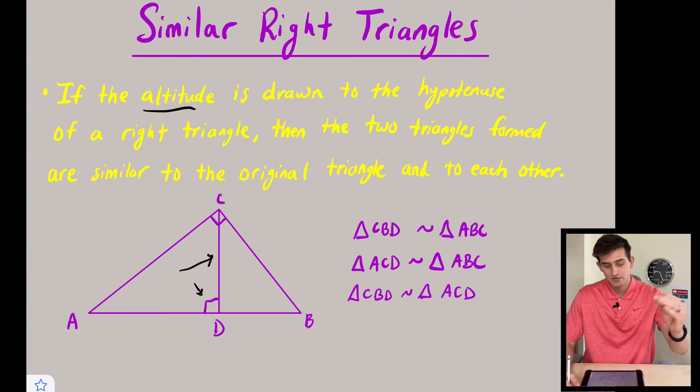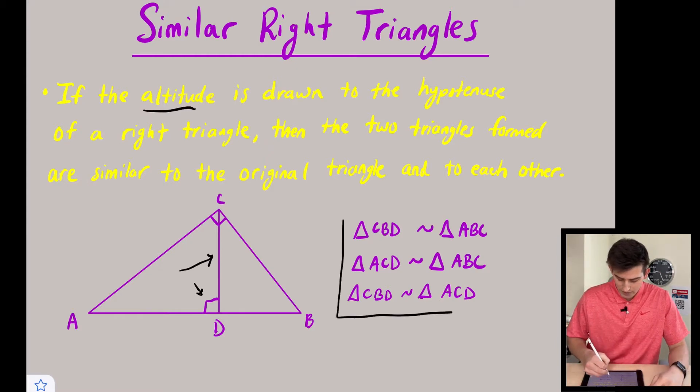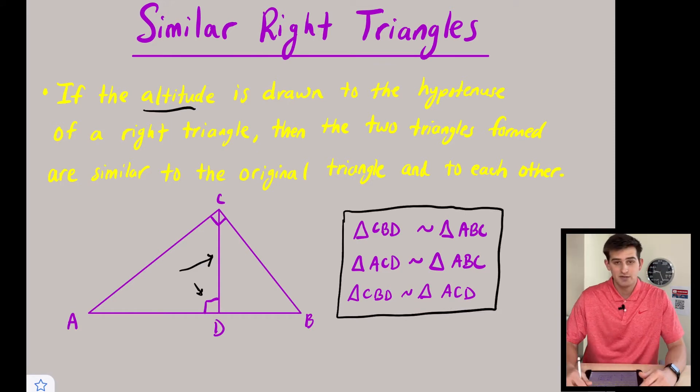We have similar right triangles that are formed. So over here to the right we see our three triangles and three similarity statements, which basically is just telling us each of these three triangles, these three right triangles, are similar to one another. So if we kind of highlight each one of these triangles here, we can see this relationship.